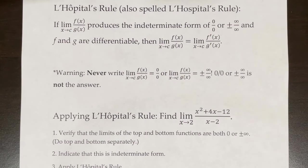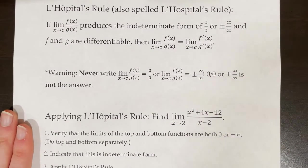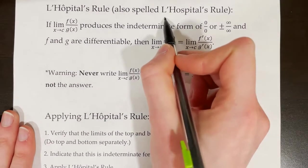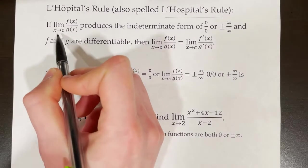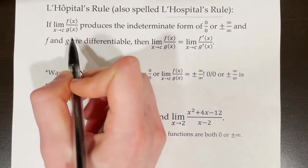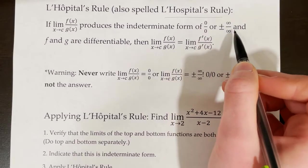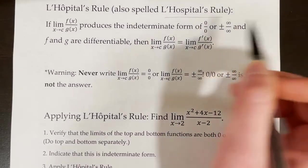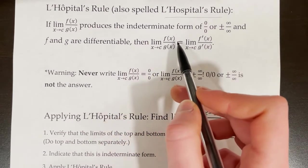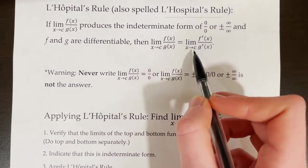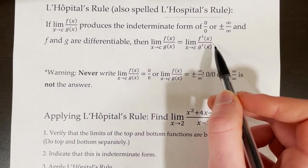Today we're going to learn a new way to evaluate limits when we wind up with indeterminate form. This way is called L'Hôpital's rule. It states that if the limit as x approaches c of f(x) over g(x) produces the indeterminate form 0/0 or ±∞/∞, and f and g are differentiable, then the limit of f(x)/g(x) equals the limit of f′(x)/g′(x).